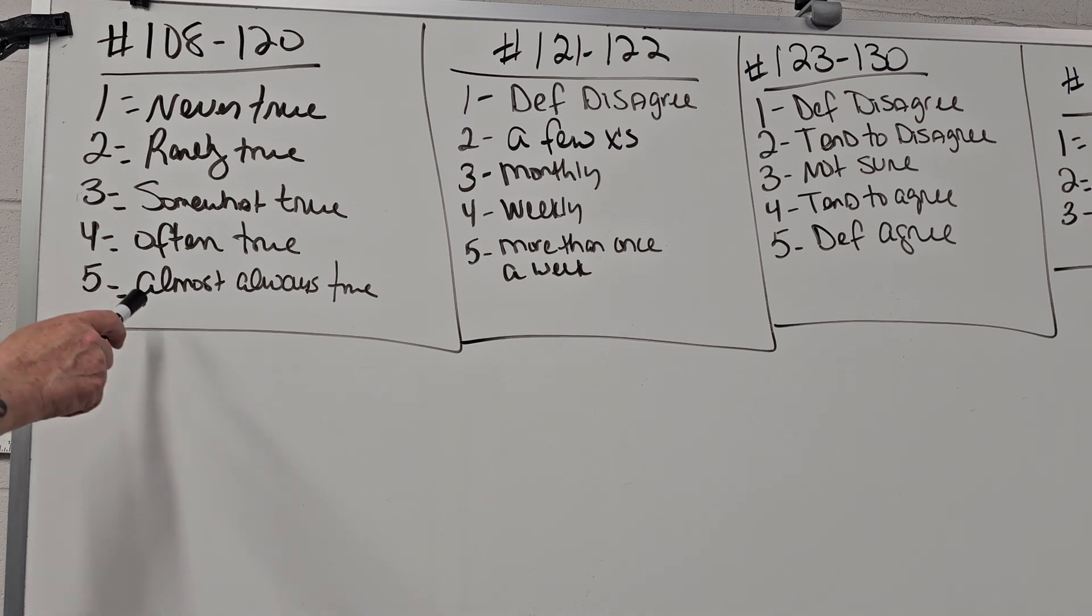116 I am generally the same person in private that I am in public. 117 when God makes me aware of his specific will for me in an area of my life I follow his leading. 118 I regularly find myself choosing God's way over my way in specific instances. 119 I am honest in my dealings with others. And 120 I regularly pray for my church's ministry.